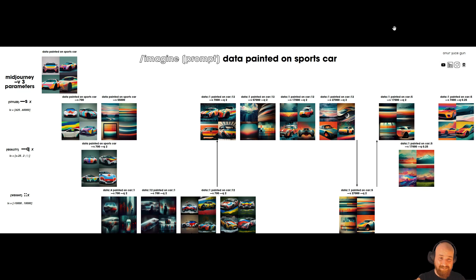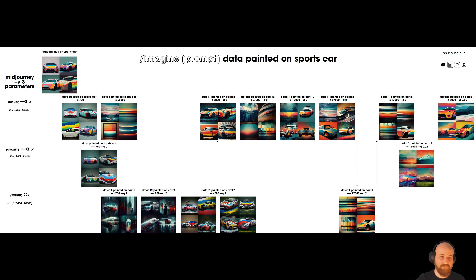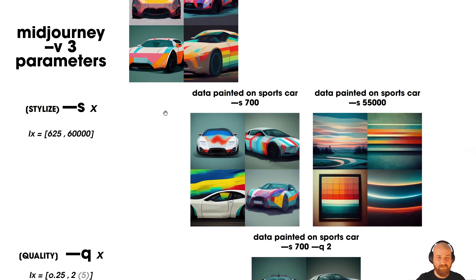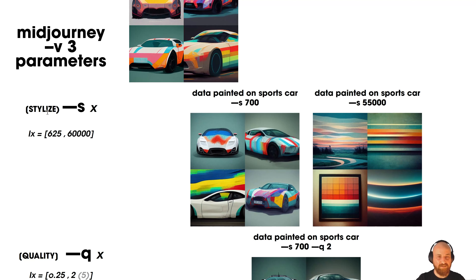Let me move back to my subject today, which is looking into these parameters. At the beginning I shared a grid of images showing what I created using the simple prompt 'data painted on sports car.' I kept the prompt as simple as possible so we can track what's really happening as we change the parameters. There are more than three parameters in the tool now, but I'm looking at these three specifically.